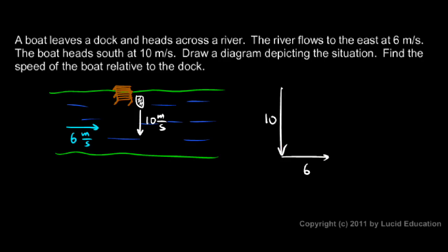The resultant, the vector sum, will go from the beginning to the end. So, it will look something like this. And we'll call it V for velocity. And we can do the math. V squared will be 10 squared plus 6 squared.